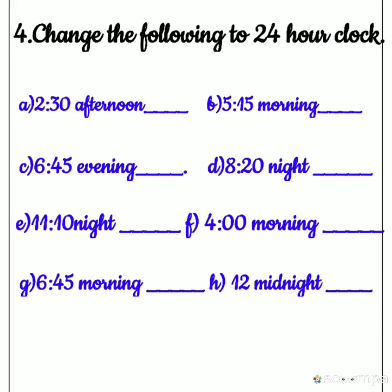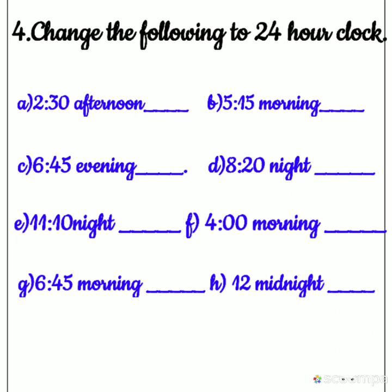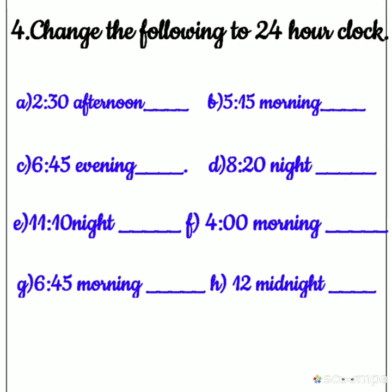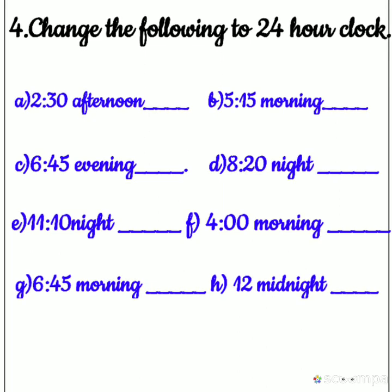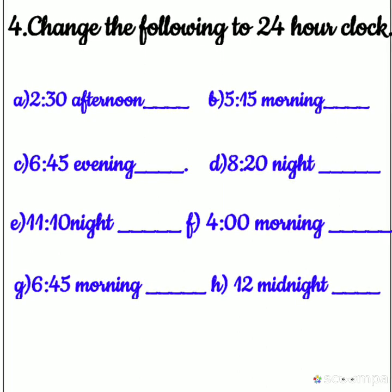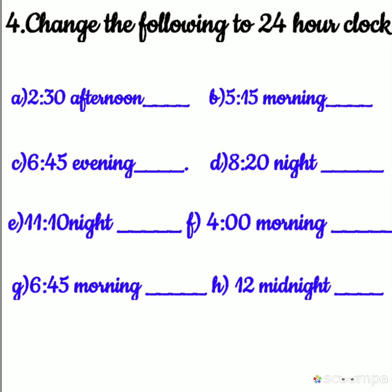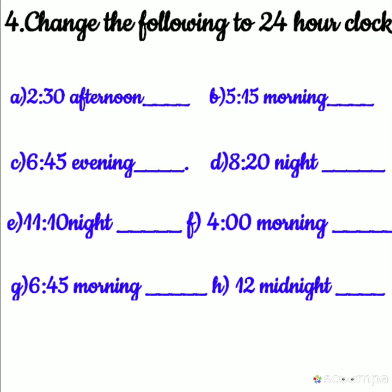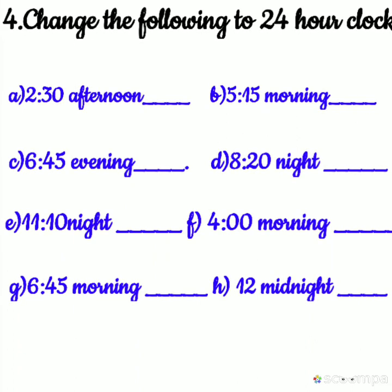4th question: change the following to 24-hour clock. Neeche kuch time diya hua hai — woh 12-hour clock mein jo time hota hai, waise likha hai. Toh aapko is time ko 24-hour clock mein change karna hai. 24-hour clock mein kaise hoga aapko pata hai na? Din ke 12 baje ke baad 1, 2, 3 aise count nahi karte. Kaise count karte hain? 13, 14 hours, 15 hours, 16 hours.